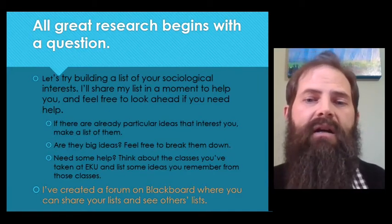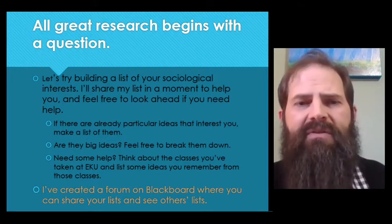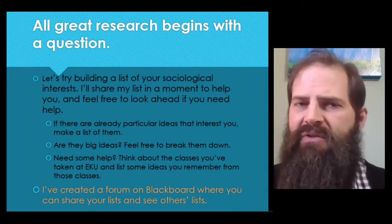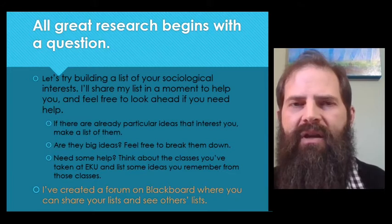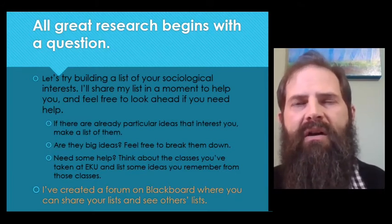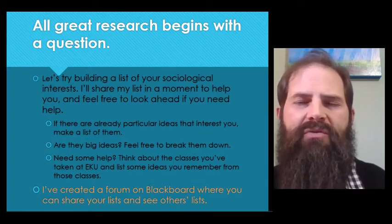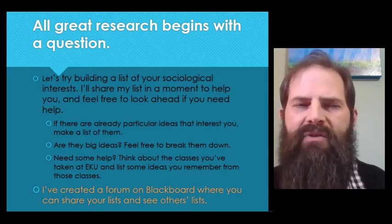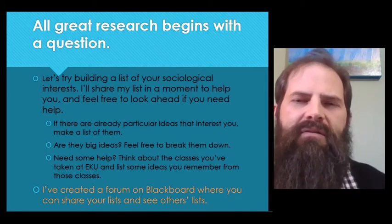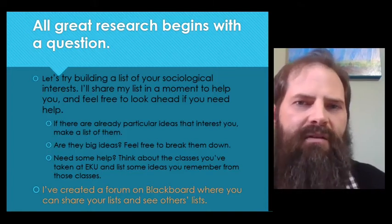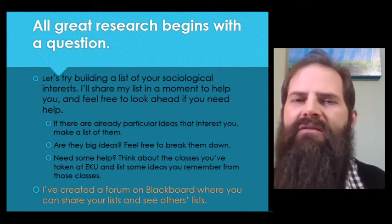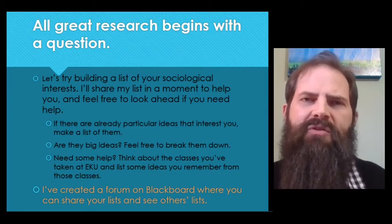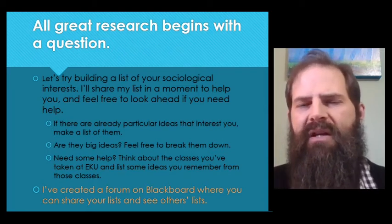Start by thinking through the things in sociology — the classes you've taken, the books you've read, the professors you've worked with. Think about the things that stuck with you. Think about the ideas that, if you had to talk about sociology as a field now, would be your go-to topics. Are there particular ideas or topics that really interested you? Go ahead and make a list of those right now. Feel free to pause the video while you do that.